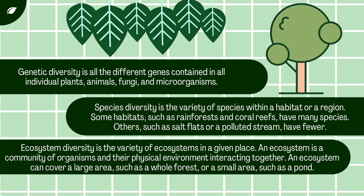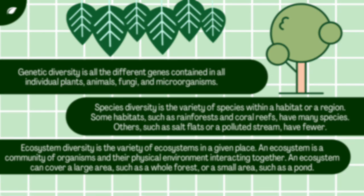Ecosystem diversity is the variety of ecosystems in a given place. An ecosystem is a community of organisms and their physical environment interacting together. An ecosystem can cover a large area, such as a whole forest, or a small area, such as a pond. It defines the diversity observed among the ecosystems in a particular region.